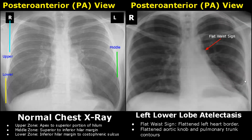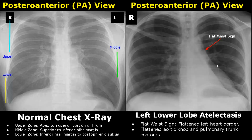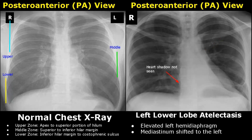The flat waist sign is another feature of left lower lobe collapse, where the left heart border is flattened and the aortic knob and pulmonary trunk contours are also flattened — in a normal image the aortic knob is clearly visible, whereas here it is flat. The left hemidiaphragm may also be elevated, much higher than its normal location. The mediastinum may also be shifted to the left because of the collapse, and the heart shadow appears displaced to the left side.